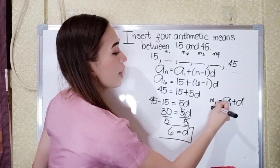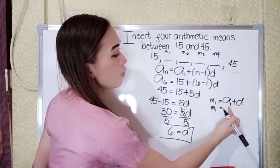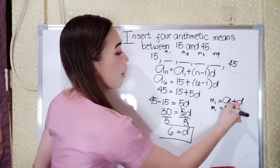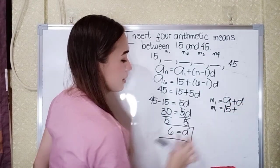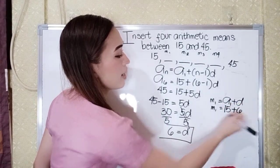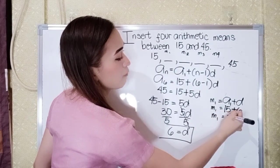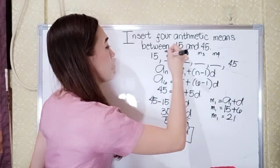So our mean sub 1 is A. So A sub 1 is 15, 15 plus 6. So that is our D. So mean sub 1 will become 21. So the answer here is 21.